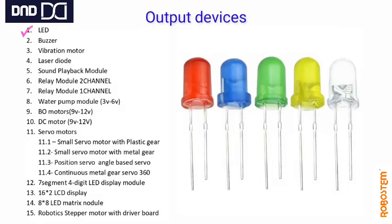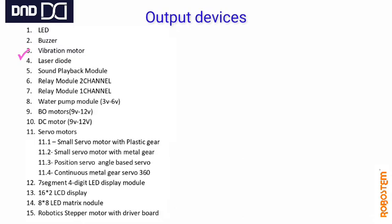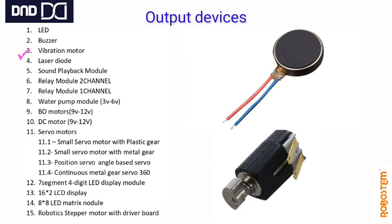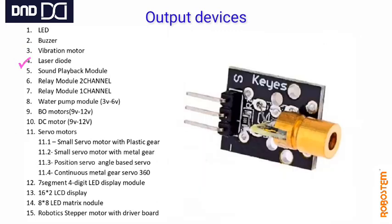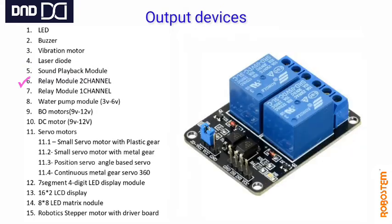Output devices include LED in different colors, a buzzer, a vibration motor, and a mobile vibrator motor. There is also a laser diode and a sound playback module, which is one of the beautiful output devices. We also have electronic devices as output.